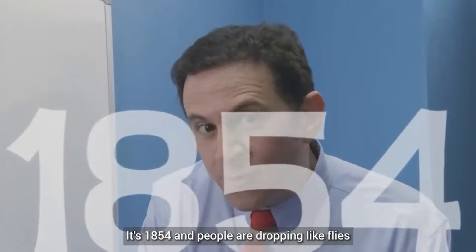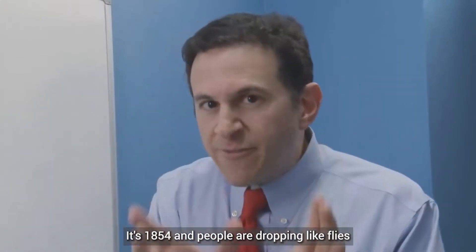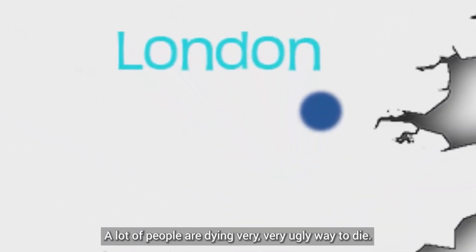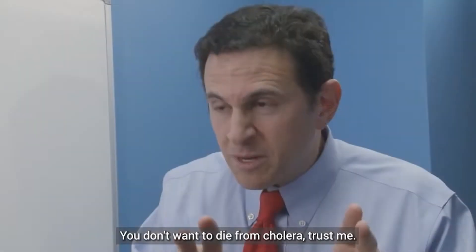Okay, it's 1854. And people are dropping like flies from cholera in England, in London, in the Soho district. A lot of people are dying. Very, very early way to die. You don't want to die from cholera, trust me.